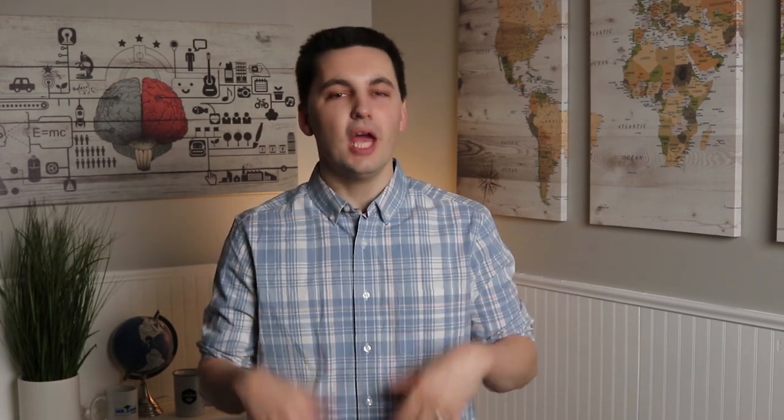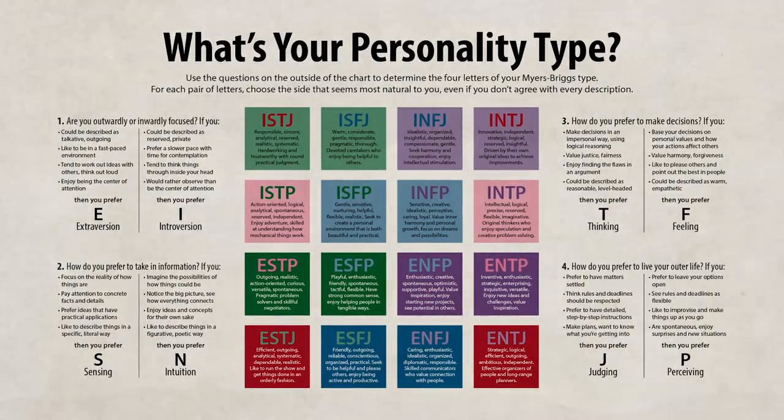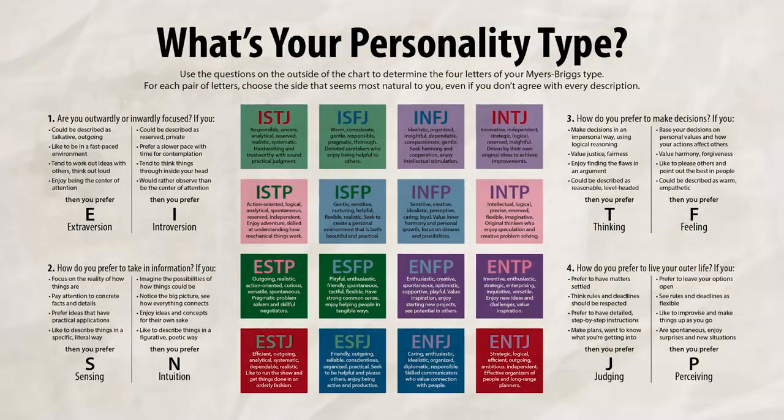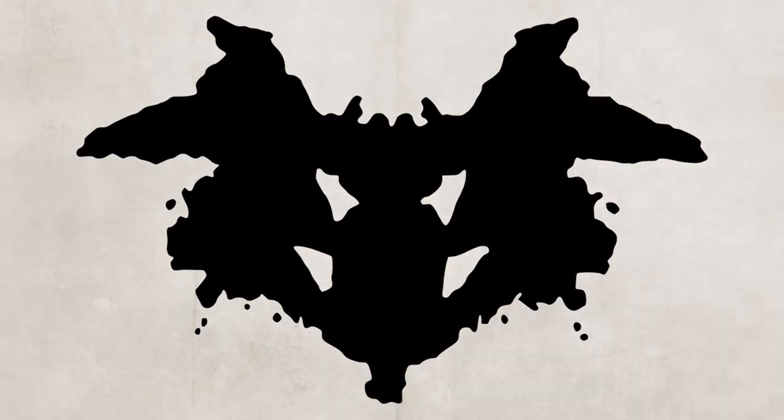Two examples of an objective personality test are the Minnesota Multiphasic Personality Inventory and the Myers-Briggs Type Indicator, which is commonly used but not as reliable and valid as the MMPI. Two examples of a projective personality test are the Rorschach inkblot test — where individuals are shown images and asked what they see — and the Thematic Apperception Test, where individuals are shown vague images and have to create a story about them.